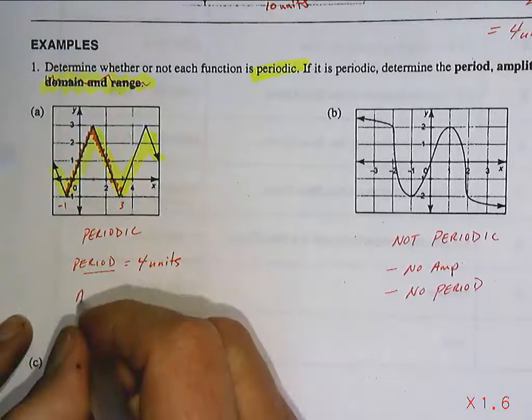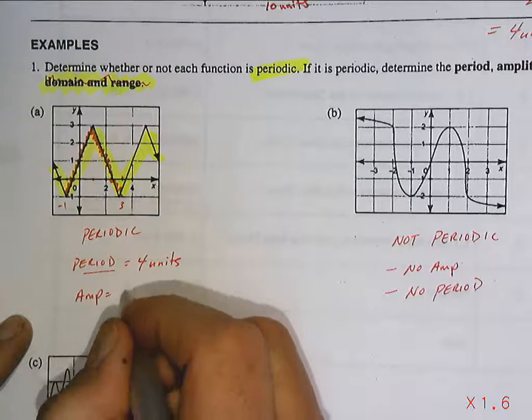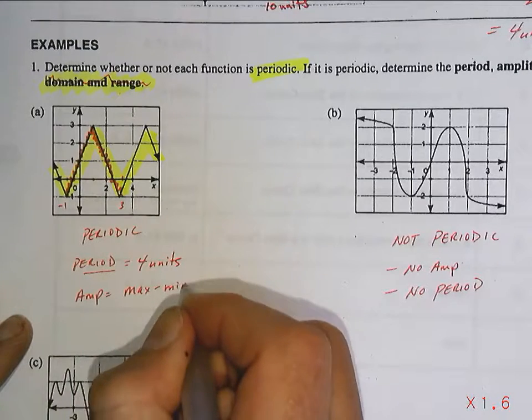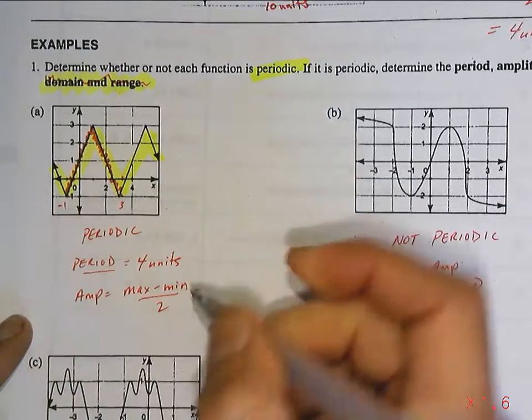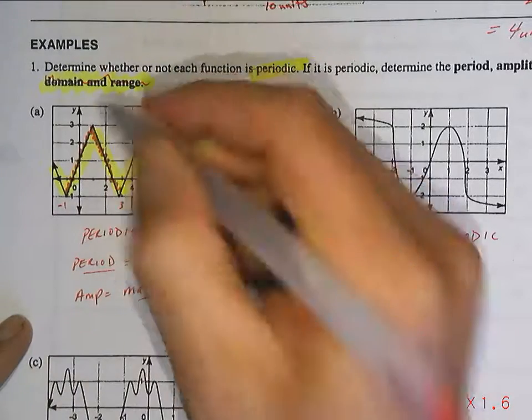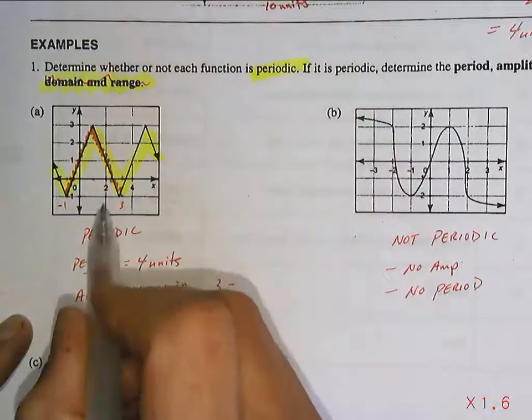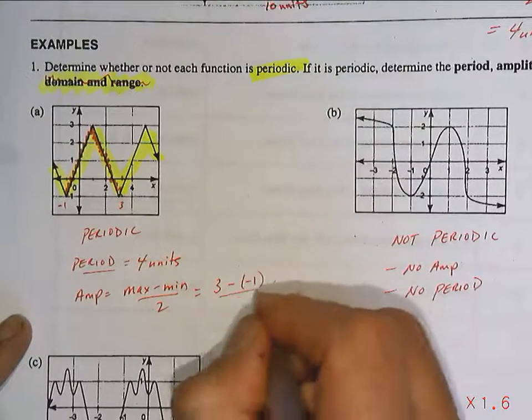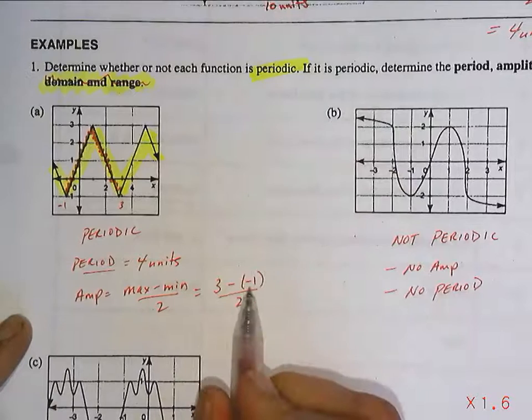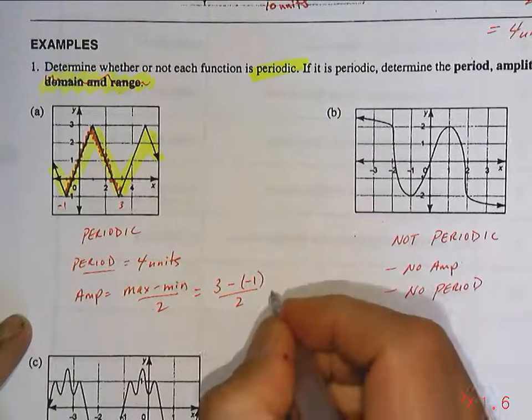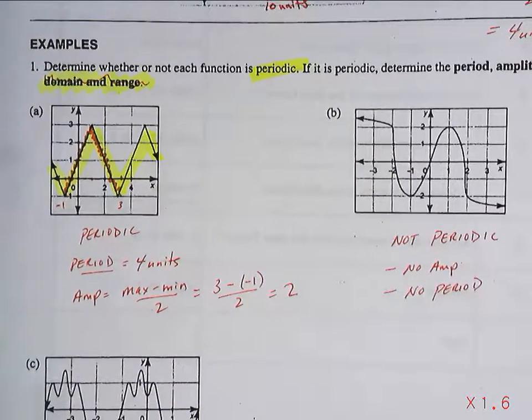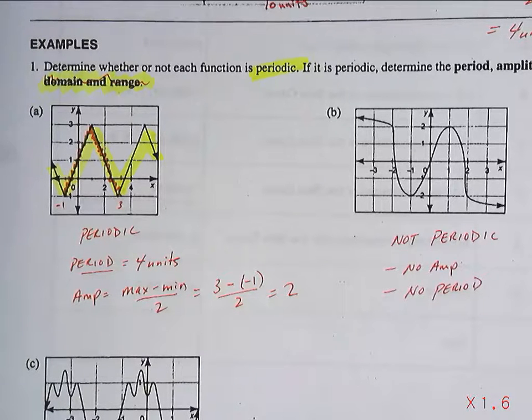The amplitude. You take the max, you subtract the min, and you divide by two. So the maximum value here seems to be three. The minimum seems to be negative one. So that's three plus one, which is four, divided by two. So it's two. The amplitude is two for this one. I'm not going to do domain and range simply because I want to talk mainly about periodic functions right now.